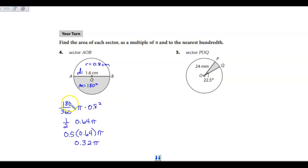When I set this up, I took 180 over 360 times pi times 8 tenths squared. Simplified that to 1 half, which I also know happens to be 0.5, times 64 hundredths times pi. When I multiply 0.5 times 64 hundredths, I get 32 hundredths pi, and this is in terms of pi.